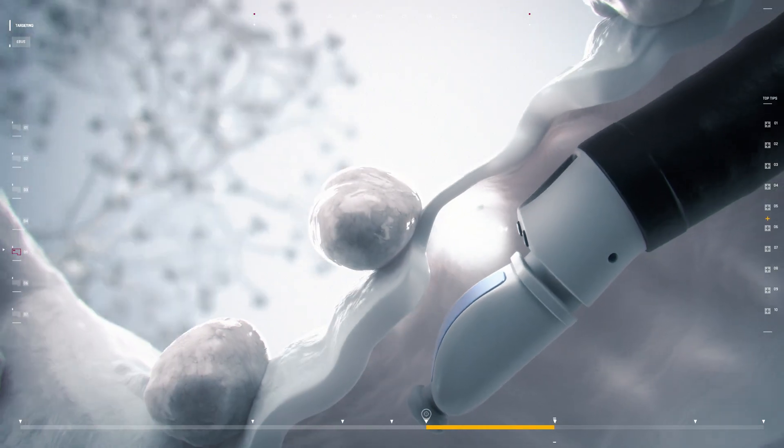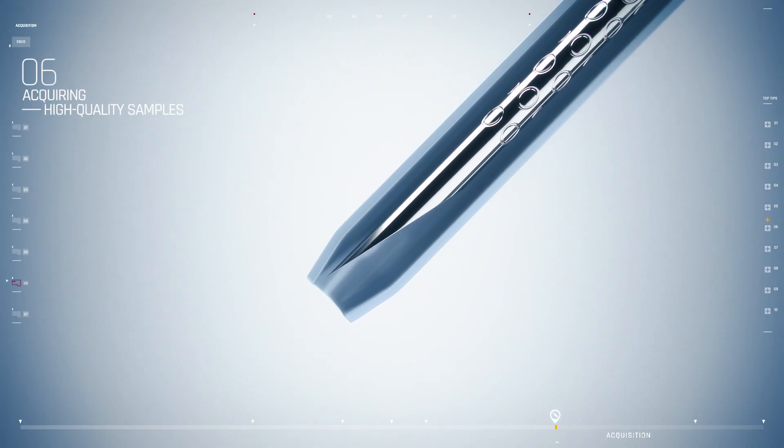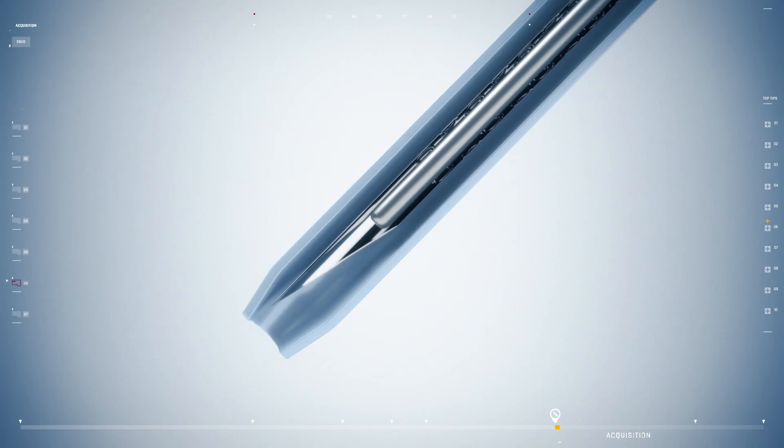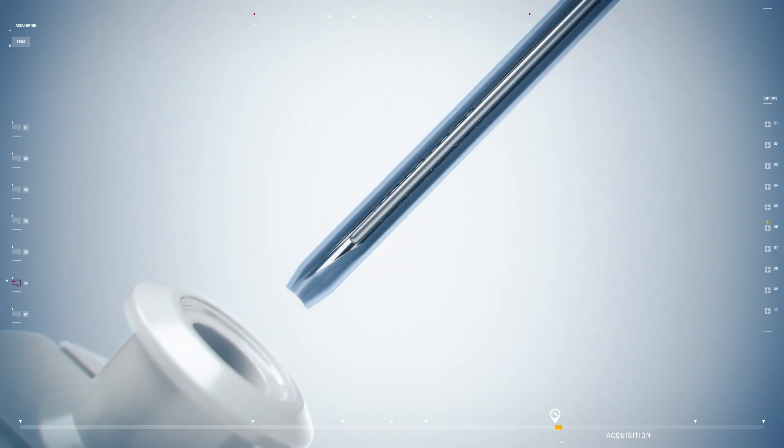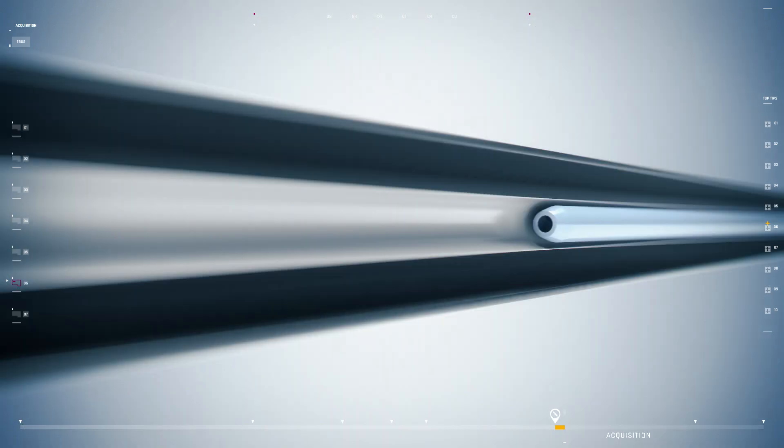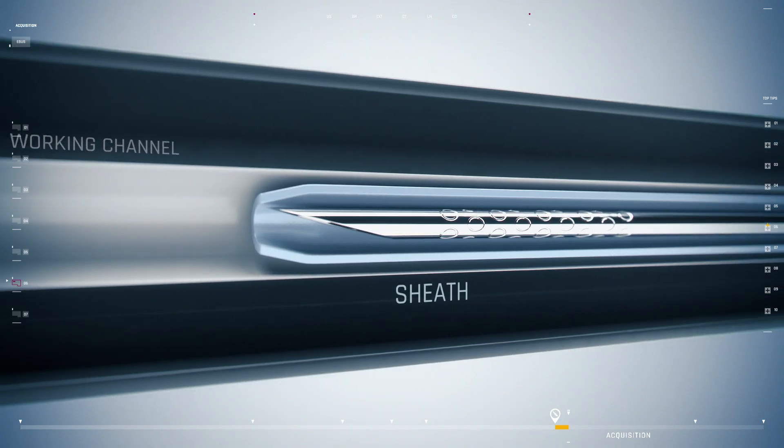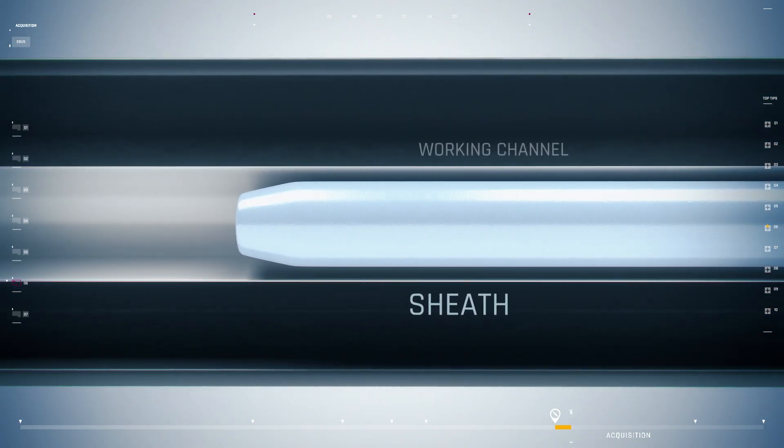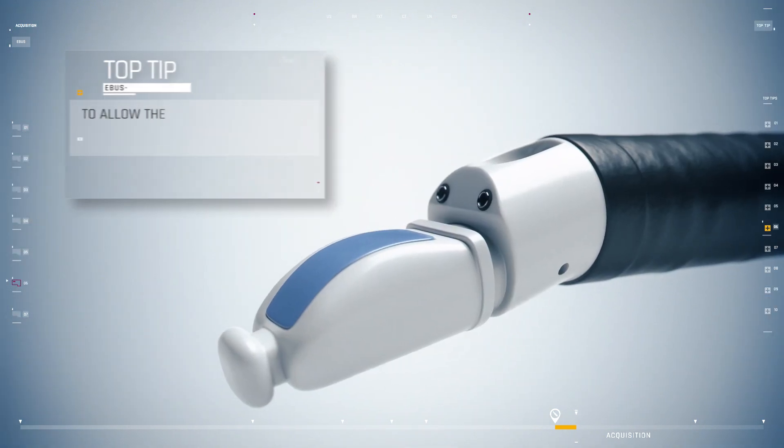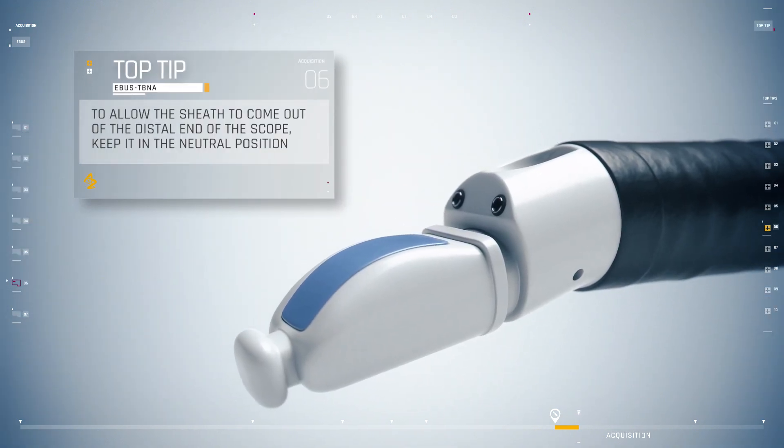After confirming the site to be sampled, the TBNA needle equipped with an internal stylet is inserted through the working channel of the EBUS bronchoscope. The needle should remain within the sheath during passage through the working channel in order to prevent damaging the bronchoscope.